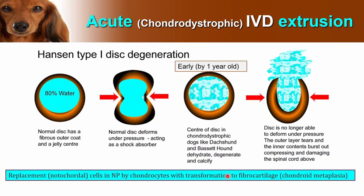The first type of disc disease we're going to talk about is an acute intervertebral disc extrusion. This has been called various things through history; the most common other name is Hansen type 1 disc degeneration, or sometimes chondrodystrophic disc degeneration. The reason for the 'chondrodystrophic' is because this is associated with chondrodystrophism — dogs with short limbs — like dachshunds, French bulldogs, basset hounds, shih tzus, sealyham terriers, that sort of dog.